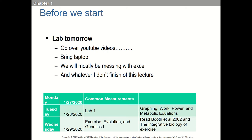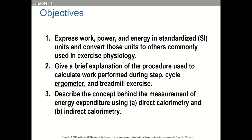Just coming up today, the 27th: common measurements. Lab one tomorrow is graphing, work, power, and metabolic equations. Then on Wednesday, exercise evolution and genetics part one, which we'll carry over to next Monday. There are PDF files in Canvas, so check those out. That's kind of the breakdown for what's coming up soon.